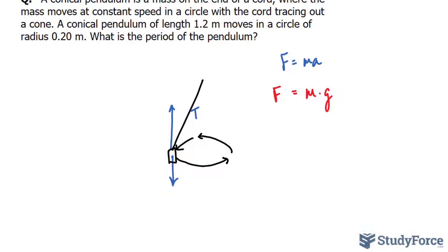So we have to create an equation that equates M times G with an expression that represents this vertical component. Now how do we do that?